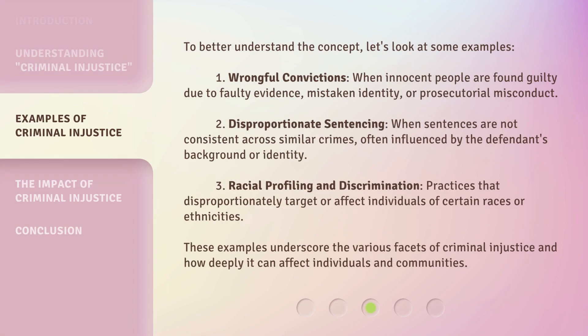To better understand the concept, let's look at some examples. First, wrongful convictions: when innocent people are found guilty due to faulty evidence, mistaken identity, or prosecutorial misconduct. Second, disproportionate sentencing: when sentences are not consistent across similar crimes, often influenced by the defendant's background or identity. Third, racial profiling and discrimination: practices that disproportionately target or affect individuals of certain races or ethnicities. These examples underscore the various facets of criminal injustice and how deeply it can affect individuals and communities.